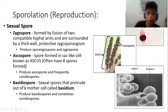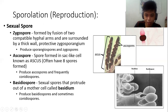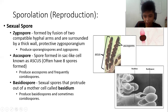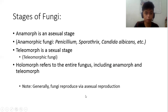The basidiospore is a sexual spore that protrudes out of a mother cell called the basidium. It produces basidiospores and sometimes conidiospores. As seen in the illustration, the basidium is the mother cell and the spores protrude — separating from where they originated — and remain partially attached.